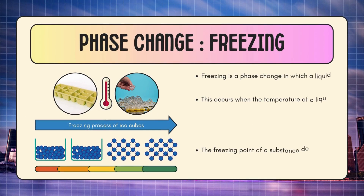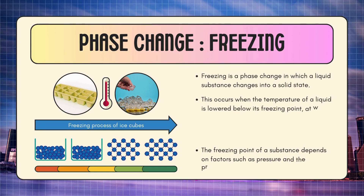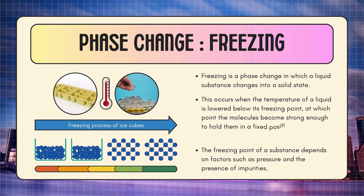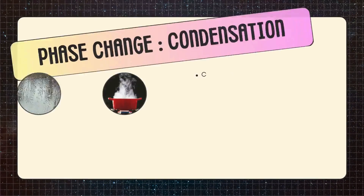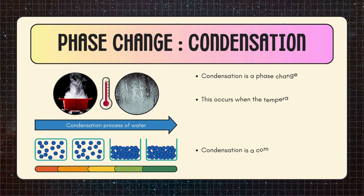Phase changes through cooling — freezing is a phase change in which a liquid substance changes into a solid state. This occurs when the temperature of a liquid is lowered below its freezing point, at which point the molecules become strong enough to hold them in a fixed position relative to each other. The freezing point of a substance depends on factors such as pressure and the presence of impurities.